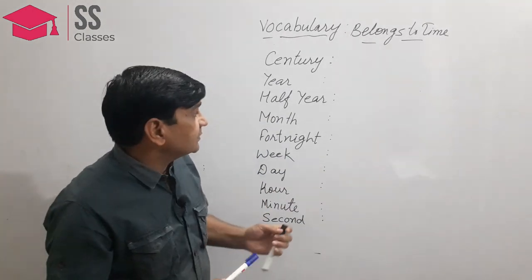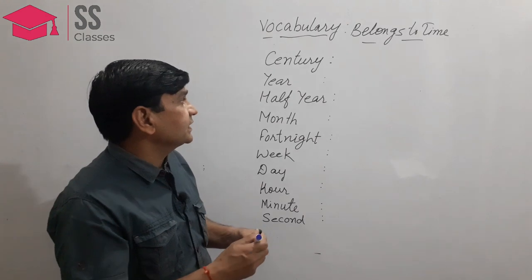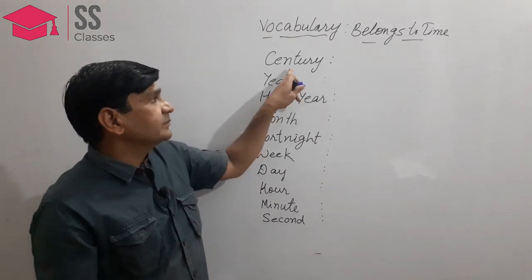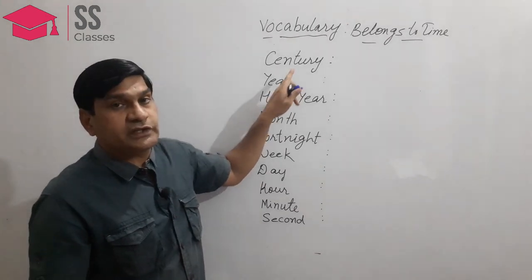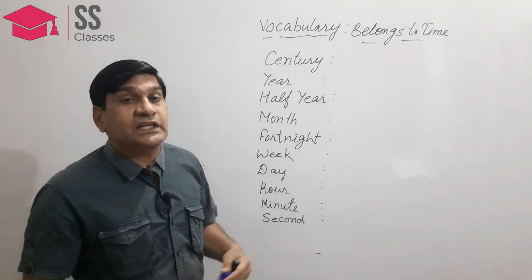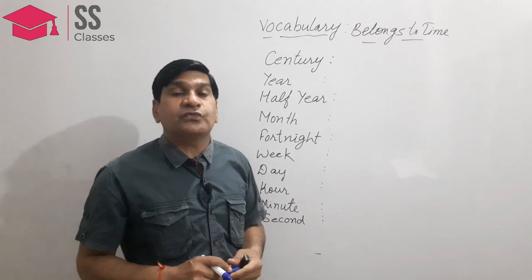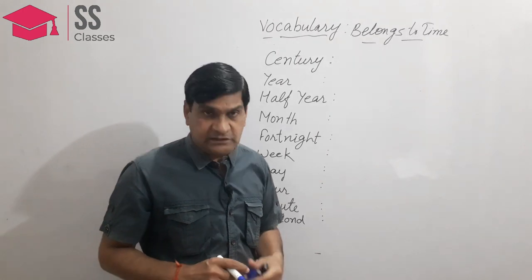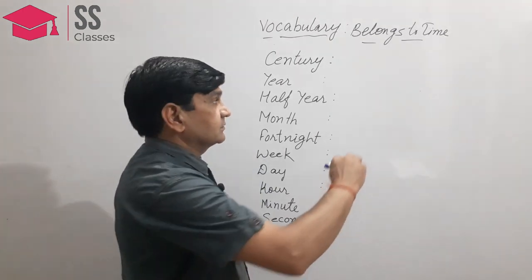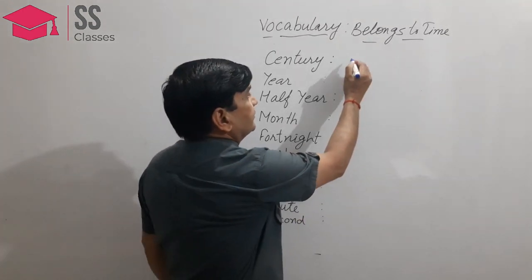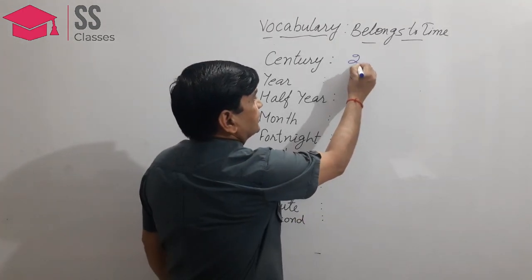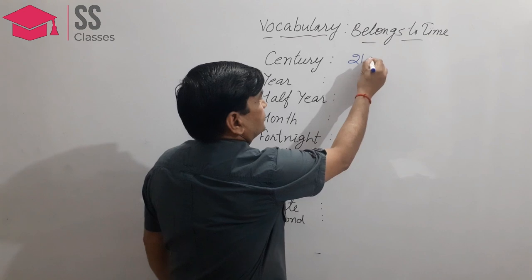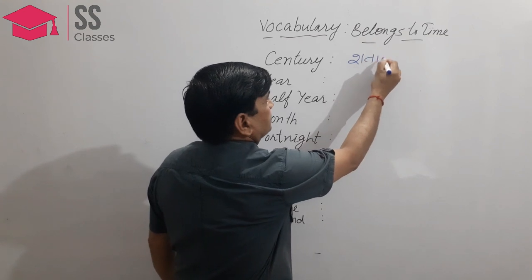First of all, we have a word called century. Century is a period of 100 years. In Hindi, we say it is Shatabdi.